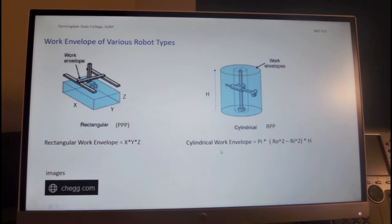We have a cylindrical robot, which is called sometimes RPP, R for being revolute providing the yaw, and prismatic in the Z, and prismatic in the radial direction.